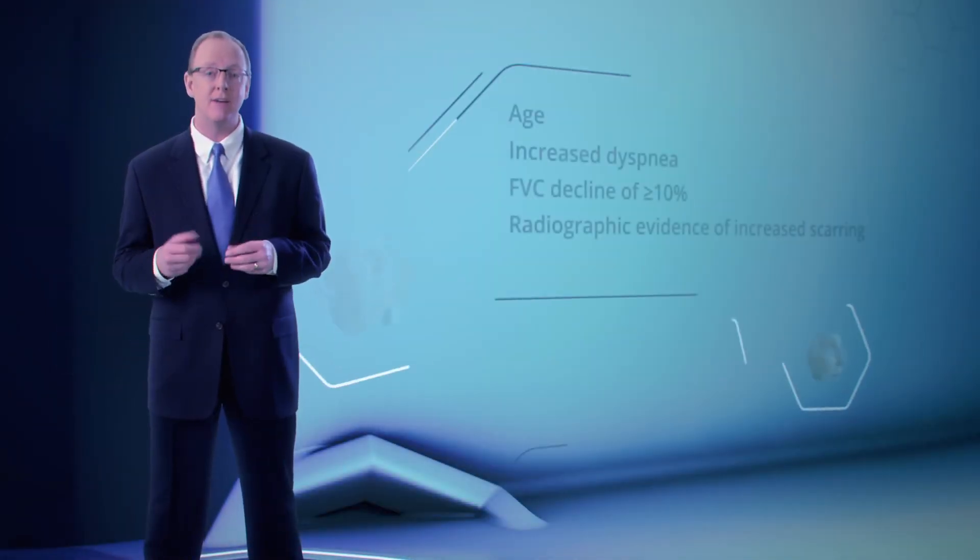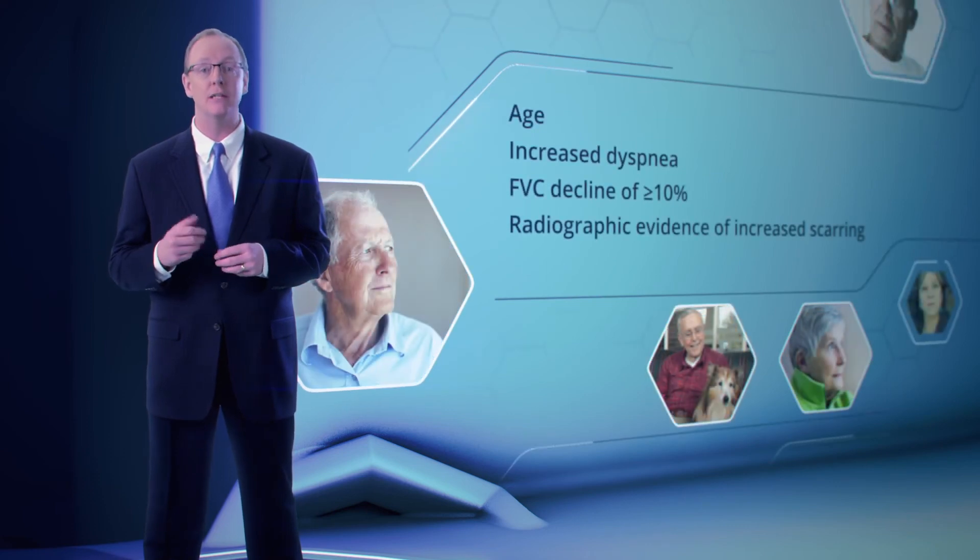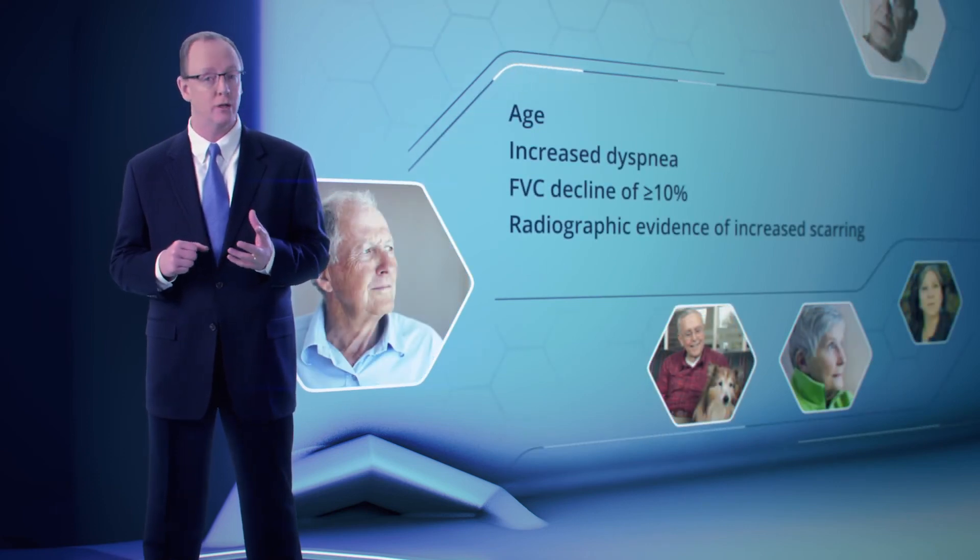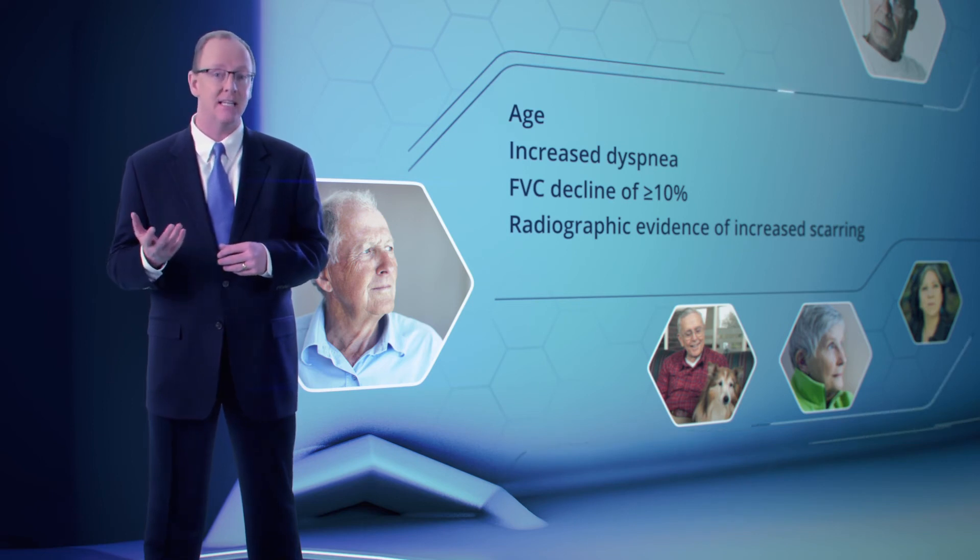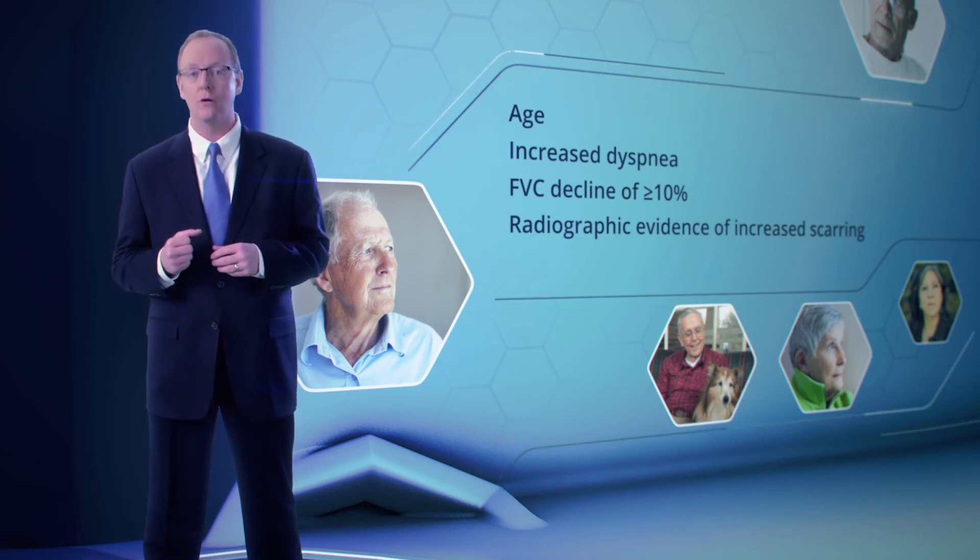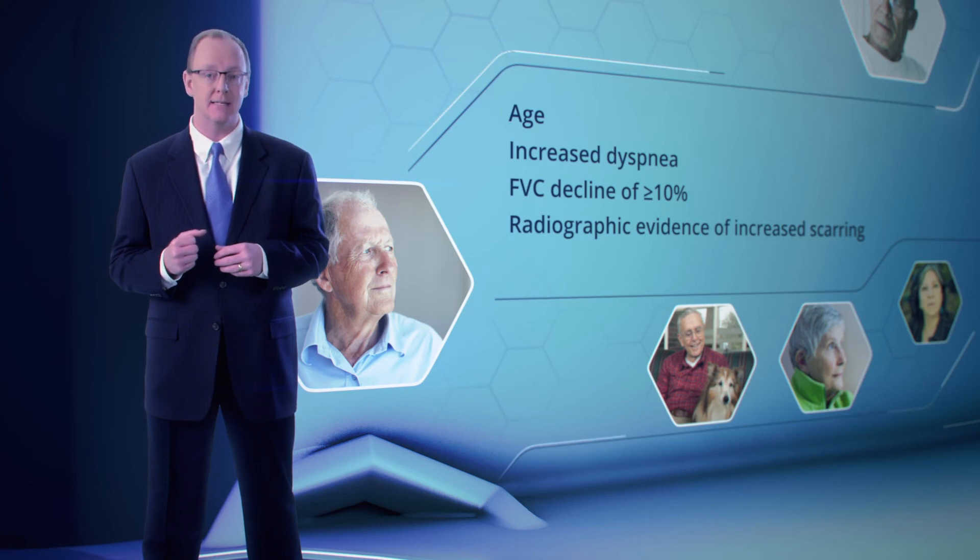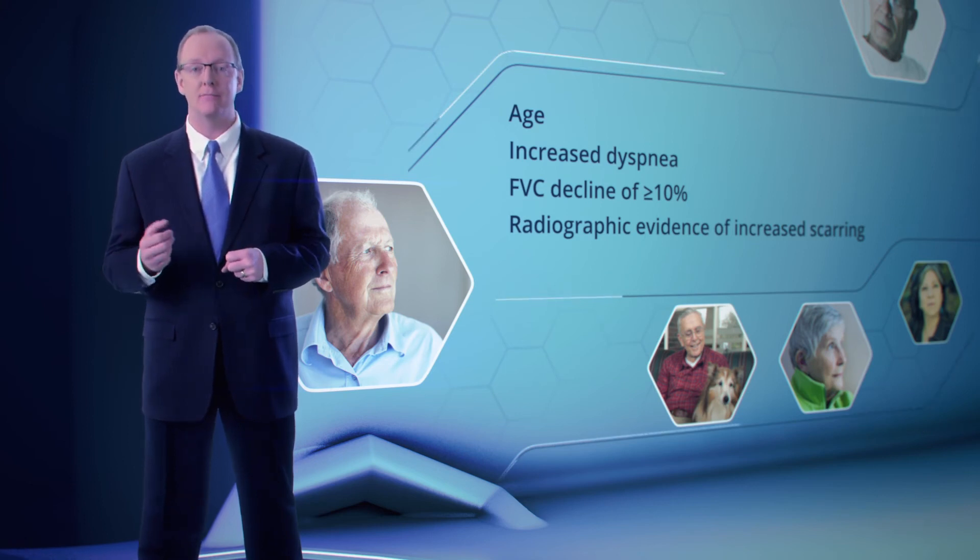In recent studies, some factors have been associated with an increased risk of mortality, including advanced age, increase in dyspnea, an FVC decline of 10% or more within 6 months from baseline testing, and increased fibrotic abnormalities as revealed by HRCT.